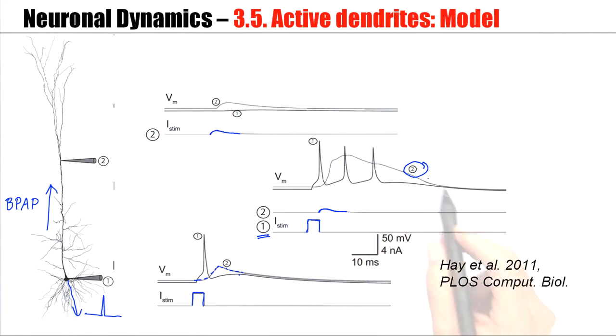This large voltage detour corresponds to a dendritic calcium spike that is fairly broad in this situation here. Now, the dendritic calcium spike will influence the voltage at the soma, so that there another two action potentials are generated.